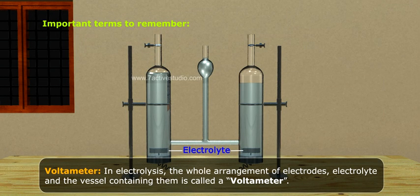Electrolysis voltmeter: in electrolysis, the whole arrangement of electrodes, electrolyte, and the vessel containing them is called a voltmeter.